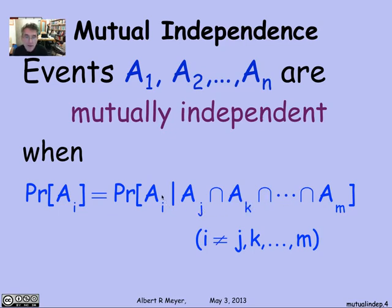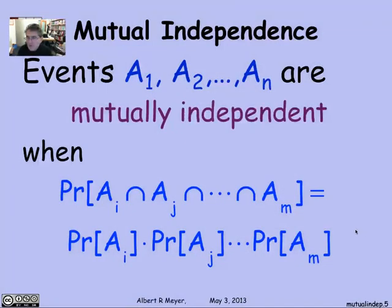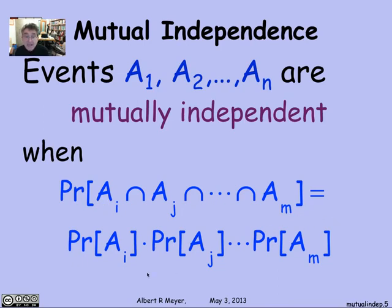A5, for example, is going to be independent of all of those other intersections. If we shift to the product definition of independence used for two sets, you could say that n sets are mutually independent when the probability of the intersection of any bunch of them equals the product of the individual probabilities of the events in the intersection.